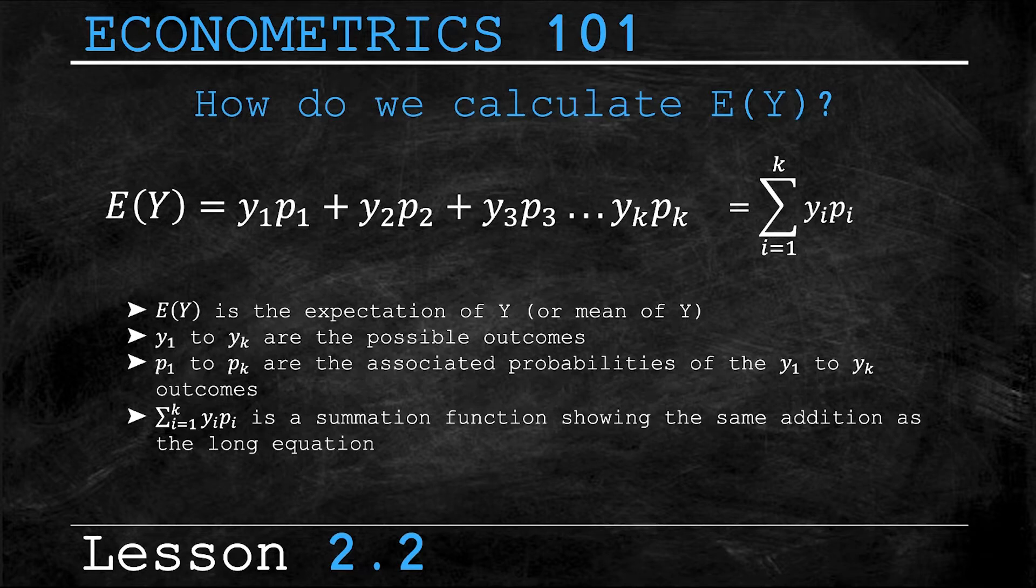showing the exact same addition as the long form or expanded equation, it's just more condensed. You would read it as the sum of all lowercase y's, which are the different outcomes, times their associated probabilities for all values of i, which run from one, the first outcome, to k, which is the final outcome.